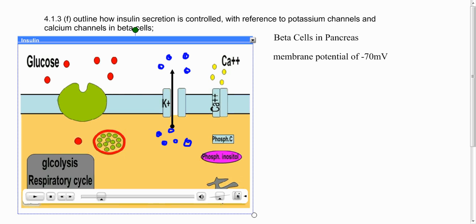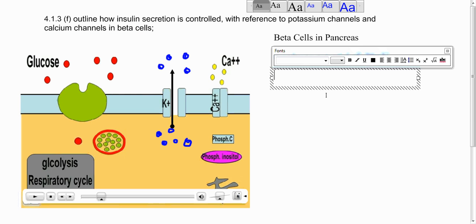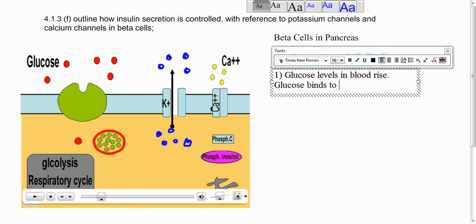I'm just going to pause it there and write down a series of events for what happens over on this side. So number one, glucose levels in the blood - and it's important to remember to be specific about saying this is in the blood - rise and glucose binds to the glucose receptor and is transported within the beta cell. Okay, so that's part one.